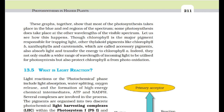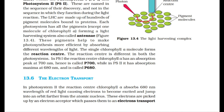Light reactions or the photochemical phase include light absorption, water splitting, oxygen release, and the formation of high-energy chemical intermediates ATP and NADPH. The pigments are organized into two discrete photochemical light-harvesting complexes (LHC) within photosystem-1 (PS1) and photosystem-2 (PS2). These are named in the sequence of their discovery, not the sequence in which they function. The LHC are made up of hundreds of pigment molecules bound to proteins.